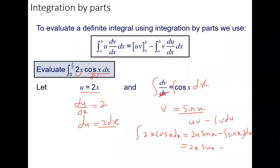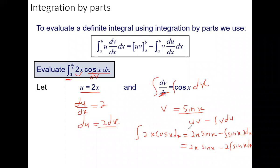This gives us 2x·sin(x) minus 2·integral of sin(x) dx. Since this is a definite integral, we are integrating from 0 to π/2, so we need to substitute the limits of integration. The same limits apply to the second integral — both are evaluated from 0 to π/2.